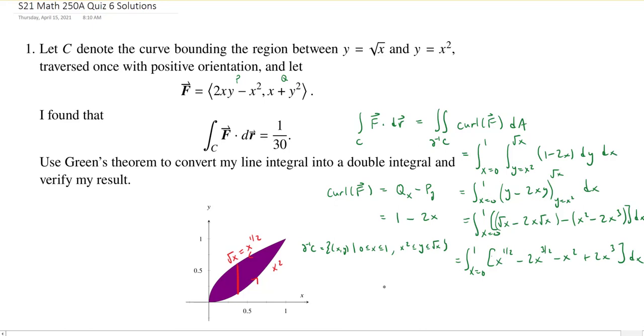When I integrate, 1 half add 1 to that, I get 3 halves. So I get 2 thirds X to the 3 halves minus, we add 1 to 3 halves and we get 5 halves. So 2 fifths times 2 is 4 fifths X to the 5 halves minus X cubed over 3 plus, add 1 to 3 you get 4, so 2 fourths which is a half X to the 4th. And X goes between 0 and 1.